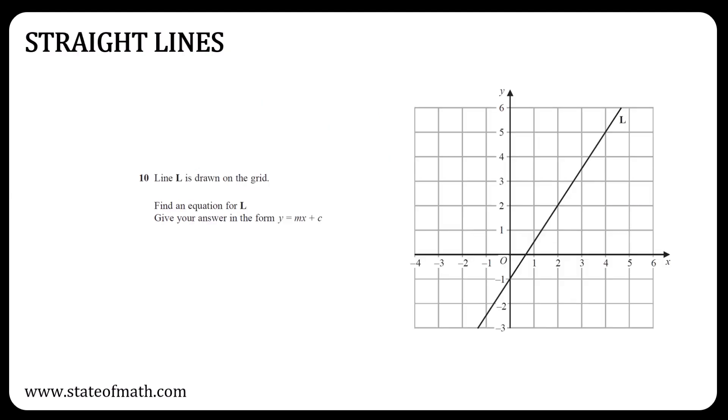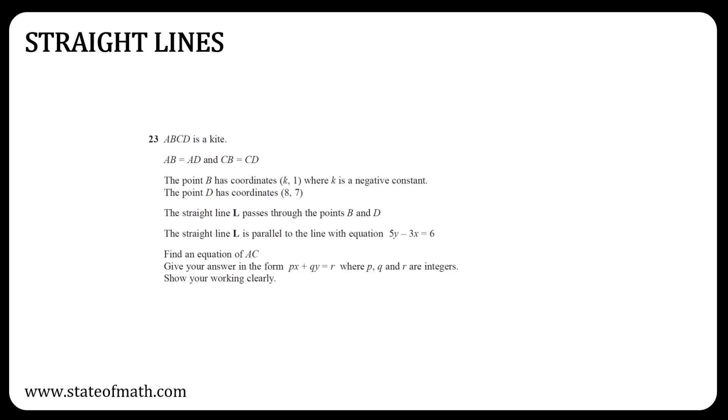There was no straight line question in 1 HR, so get ready for at least one. You could have a simple straightforward question like this one, or a more challenging one. For this chapter, you should be familiar with gradient, parallel lines, perpendicular lines, midpoint, and distance between two points. You should also know the properties of quadrilaterals like rectangle, rhombus, kite, and so on.